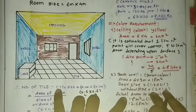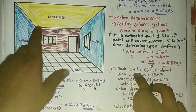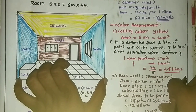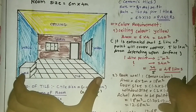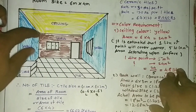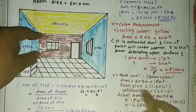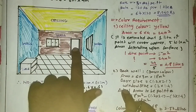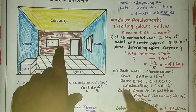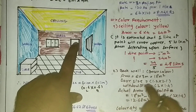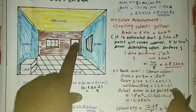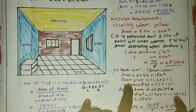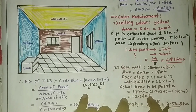Next, the back wall — the brown colored back wall. The area of this wall: the width is 6 meters and height is 3 meters, so area = 6 × 3 = 18 square meters. But I do not need to paint the door and window, so I deduct those areas. Door size is 1.2 × 2.1 and window size is 2 × 1.4. The actual area to be painted is 18 minus the door and window areas = 12.68 square meters.